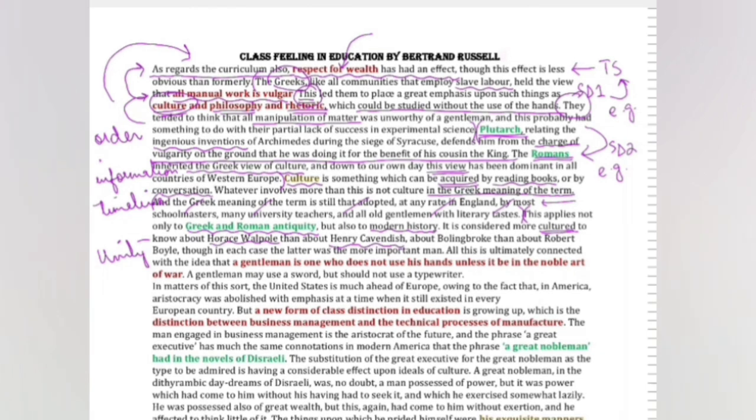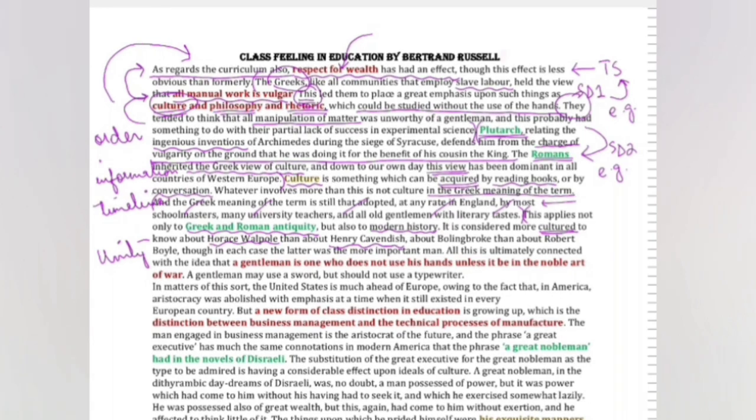So this line is very important. Ab woh cultured se kya murad hai? So now the people whom we call cultured are those who know Horace Walpole, who is a writer, but not Henry Cavendish, who was a chemist. The same is true for those people who know Bolingbroke - Bolingbroke was a politician and Robert Boyle was a physicist and chemist. So a cultured person is the one who knows the politicians, the writers, but not the one who is familiar to physicists, chemists, and mathematicians.